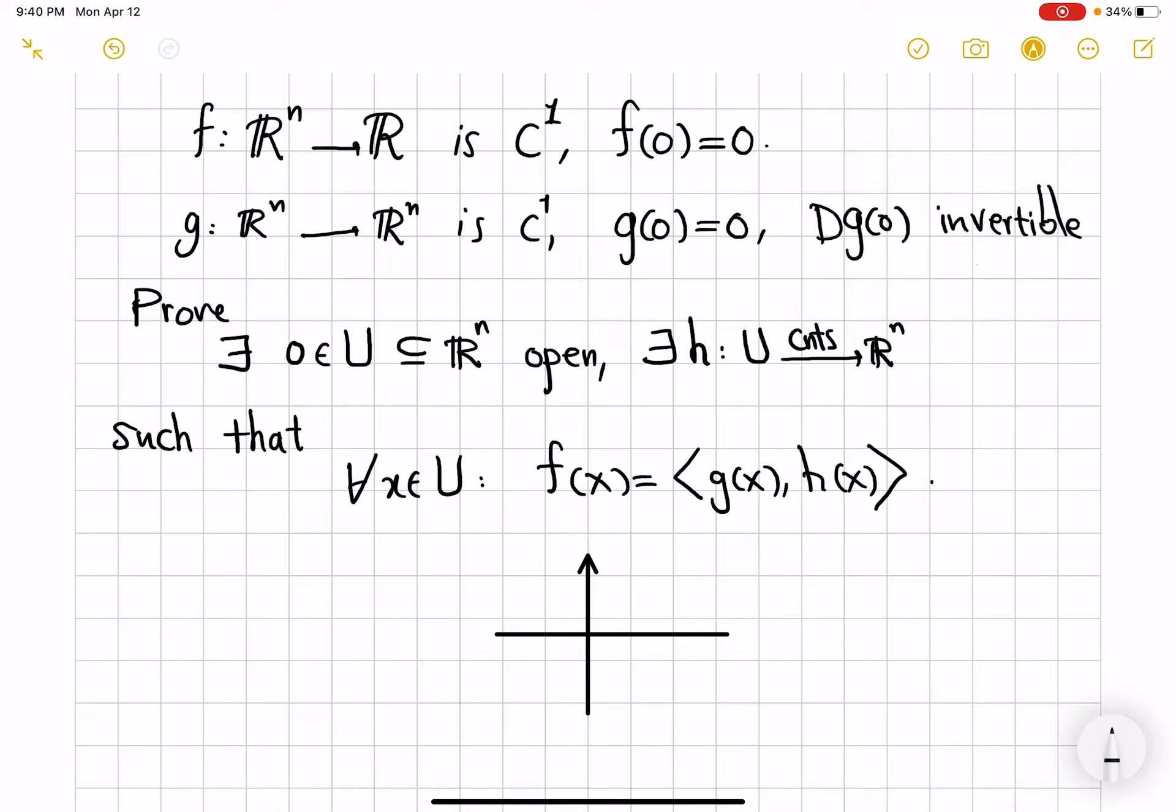So the question is, you are given a scalar function f and a vector function g. So at every x, you have a vector g of x, and also you will have a scalar value, a real number f of x, which satisfy these C¹ conditions and also invertibility of Dg(0).